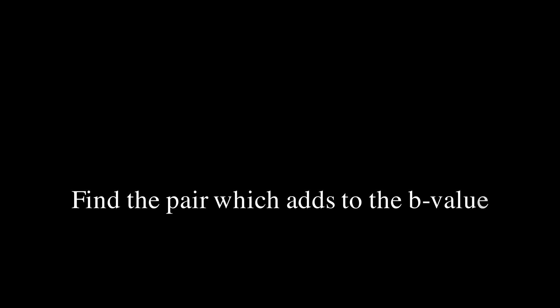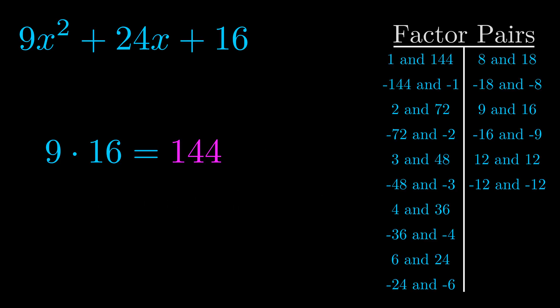The b value is the coefficient on the x term — that's the middle term, the one that we haven't done anything with yet. And really this is the only factor pair that we need.